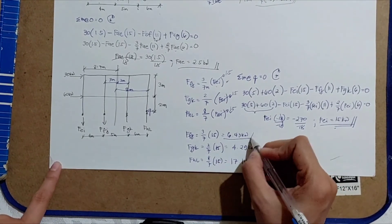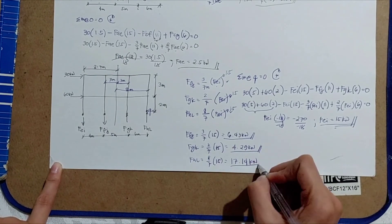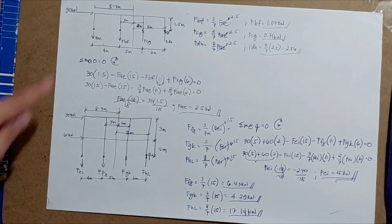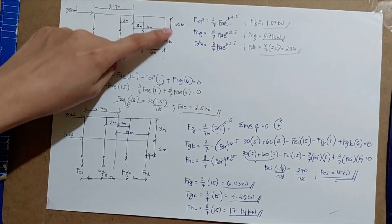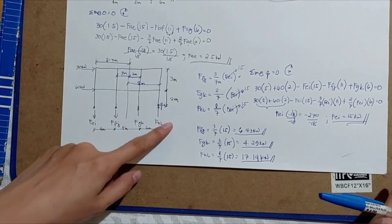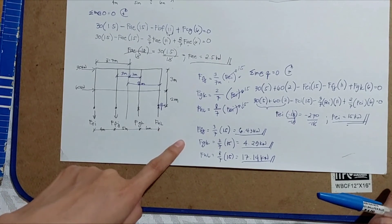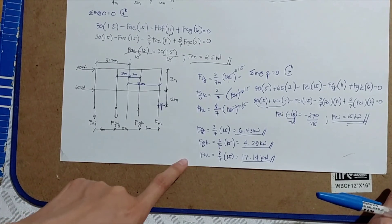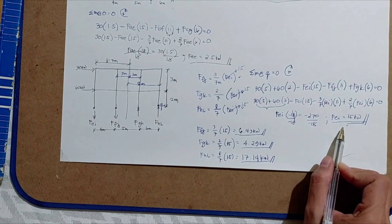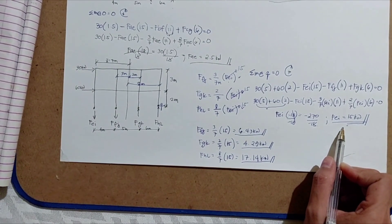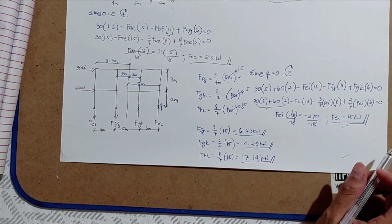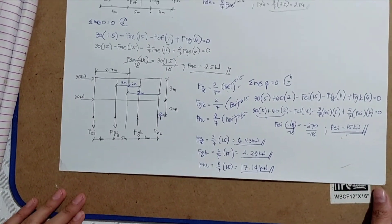These are the values for the actual loads: FBF, FCG, FDH for the upper level, and FFJ, FGK, FHL for the lower level, along with FAE and FEI. These values will also be used in the cantilever method.